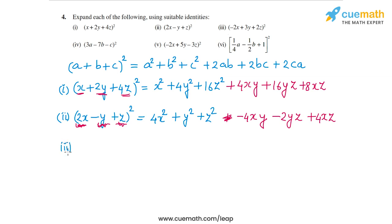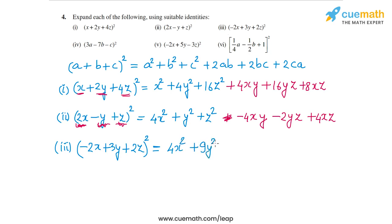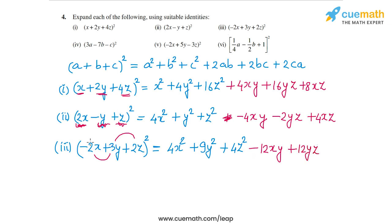In the third part we have (-2x + 3y + 2z)². This expands as (-2x)² = 4x², plus (3y)² = 9y², plus (2z)² = 4z². For the cross terms: 2ab = 2 × (-2x) × 3y = -12xy; then 2bc = 2 × 3y × 2z = 12yz; and 2ca = -8xz. So this is the expanded form of the third part.